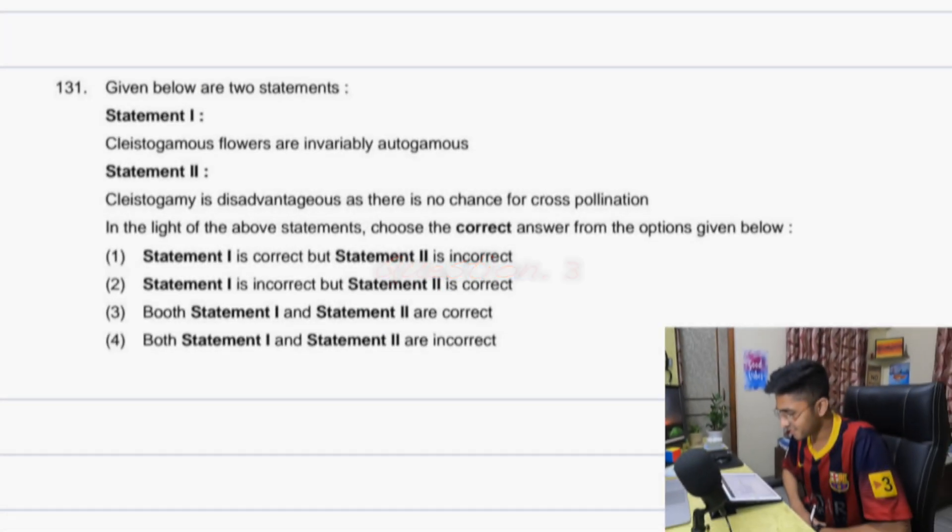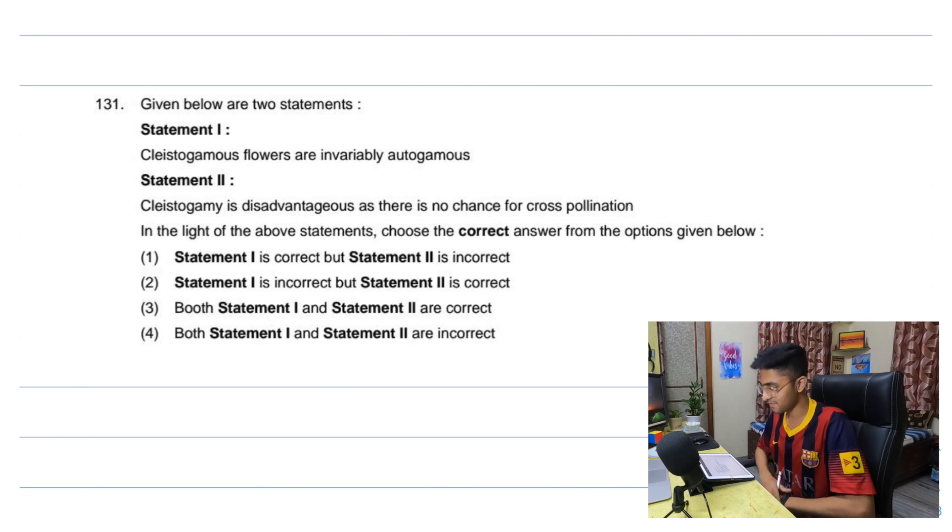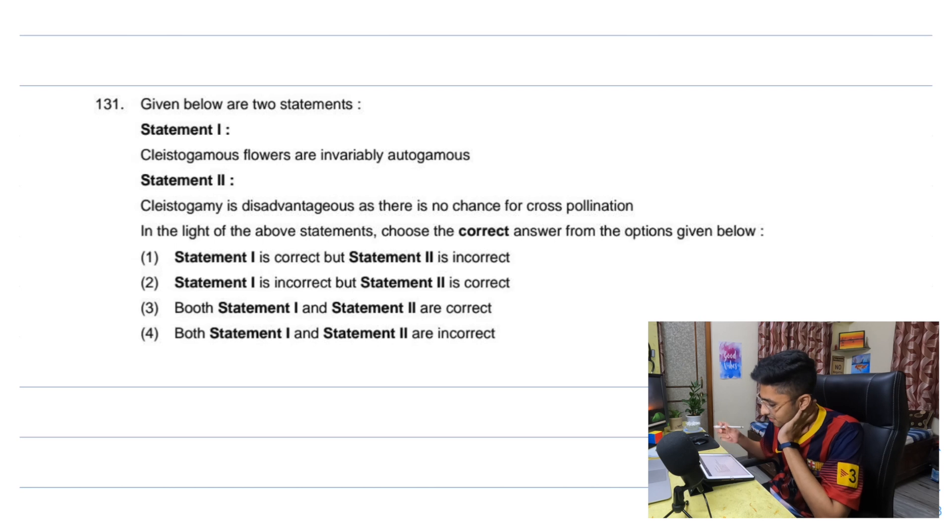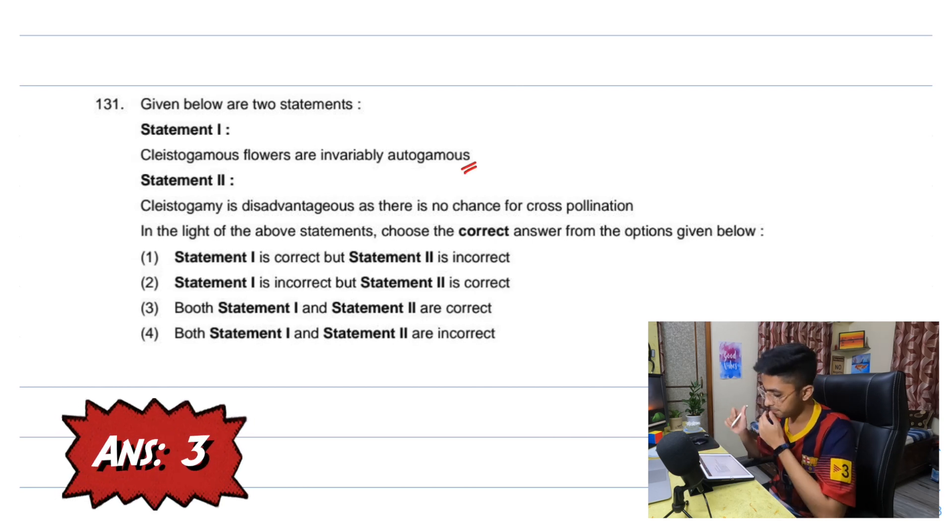Cleistogamous flowers are invariably autogamous. What is cleistogamous? I don't know. Cleistogamy is disadvantageous as there is no chance of cross pollination. I don't know that term. So we're going to flick this question. I have no idea. Let's go with both correct.